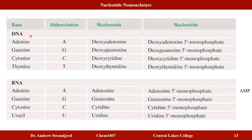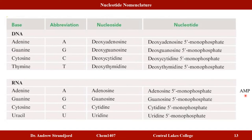A table lists the nitrogenous bases for DNA and RNA, their abbreviations, nucleoside names, and nucleotide names. For adenine in RNA, the nucleoside is adenosine and the nucleotide is adenosine-5'-monophosphate, commonly referred to as AMP. We will see AMP again when discussing metabolism, so keep that in mind.